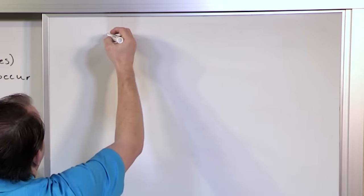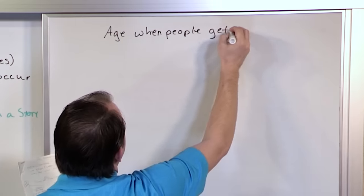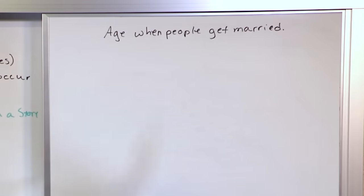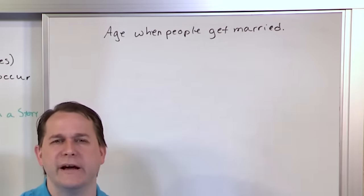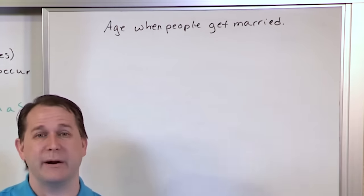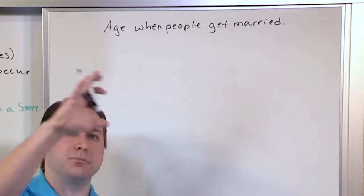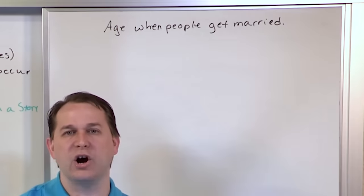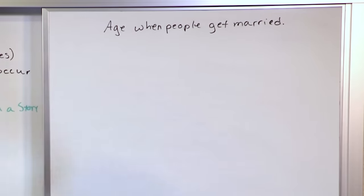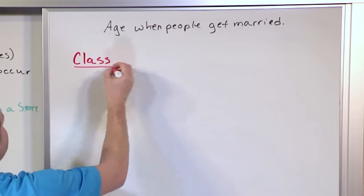For this next frequency distribution, we're going to represent the age when people get married — in a certain city, state, or country. You take a sample, basically a survey. You might call a million people and ask how old they were when they got married. Some people get married in their 20s, some in their 30s, some in their 70s, and a small number when they're teenagers. You don't want to represent millions of rows of raw data — you want something compact so someone can quickly draw conclusions.